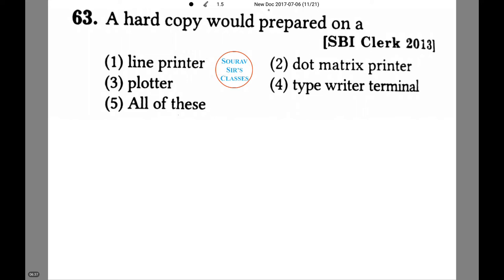A hard copy would be prepared on a computer among the following options. Let's check out one by one. Line printer? Yes, a line printer produces a hard copy. Hence option number one is correct. Next check option number two. I have already marked it as a correct answer because it's a dot matrix printer. A printer is known predominantly as a main hard copy maker.